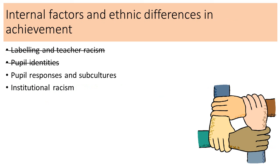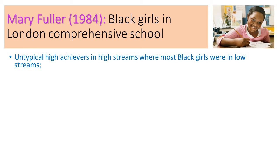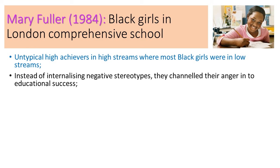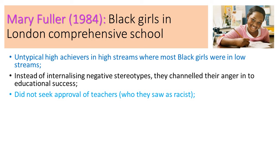Next we look at pupil responses and subcultures. Mary Fuller did a famous study on black girls in a London comprehensive school in the early 1980s. This was a particularly interesting group because they were untypical high achievers in high streams. Instead of internalizing negative stereotypes, they channeled their anger at the education system and teacher racism into their work, which led to educational success. They did not seek the approval of teachers they saw as racist.